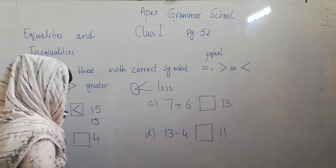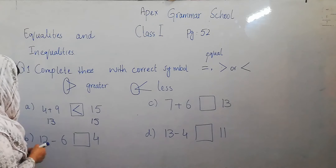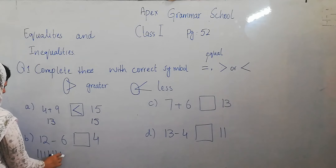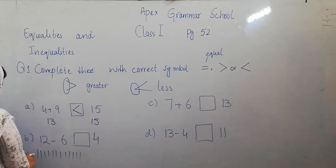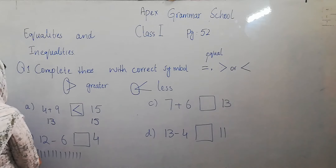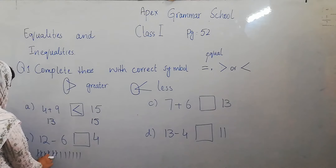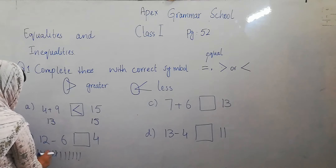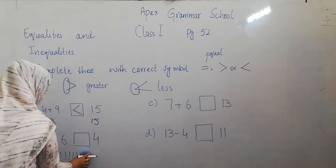Now part b: 12 minus 6. Draw 12 tally marks: 1, 2, 3, 4, 5, 6, 7, 8, 9, 10, 11, 12. Cut 6 lines: 1, 2, 3, 4, 5, 6. Then count remaining: 1, 2, 3, 4, 5, 6. It means the answer is 6.